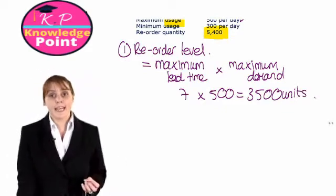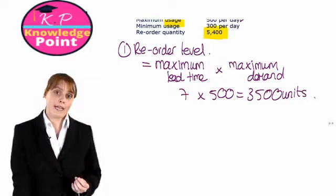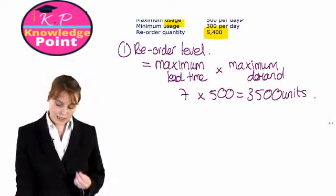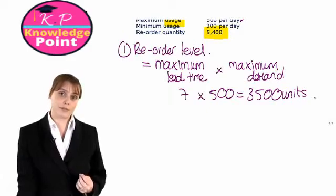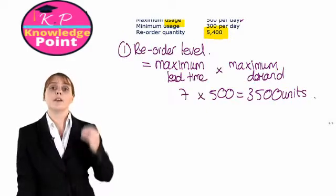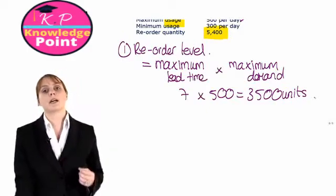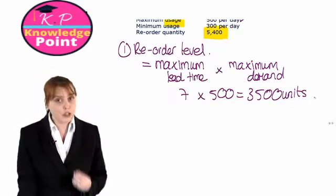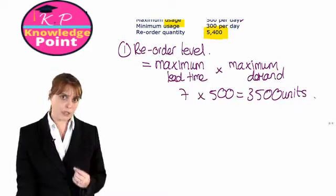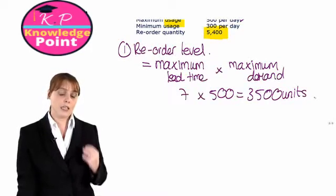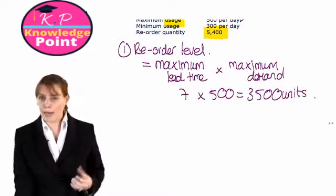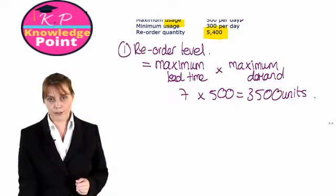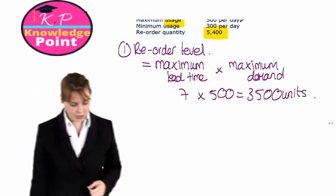What we are saying here is that when the stock in our warehouse reaches 3,500 units, we place our new order with the supplier. This ensures we will not run out of stock, even if we're waiting for the maximum lead time for the new order to arrive.